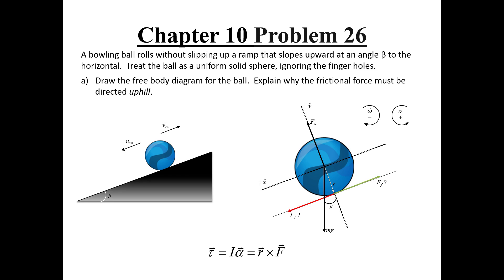All of the torque on the ball is being caused by friction. The direction of the cross product between the force of friction and its displacement from the center needs to be in the direction of the angular acceleration. There are a couple of ways to visualize this — you can use the right-hand rule, or imagine which way the frictional forces would rotate the ball. Using the right-hand rule, if you line your fingers up with the radius vector so that your thumb is pointing out toward you, the only way to keep your thumb pointing that way while curling your fingers toward one of the frictional forces is if friction acts up the incline.